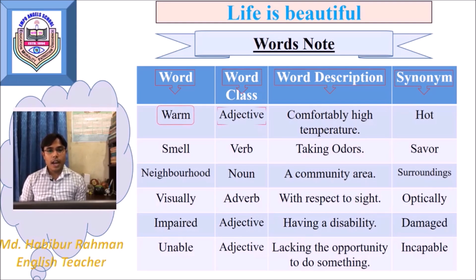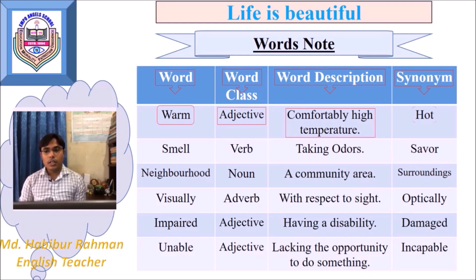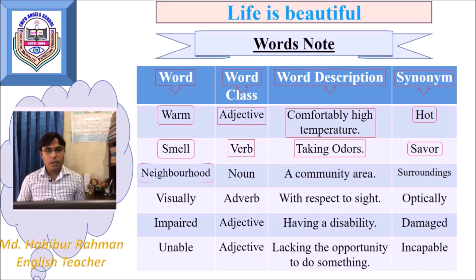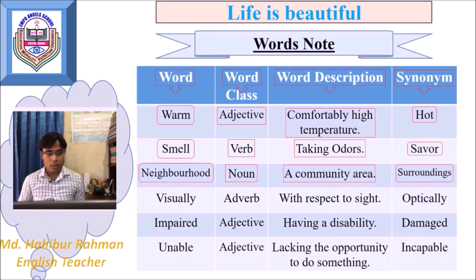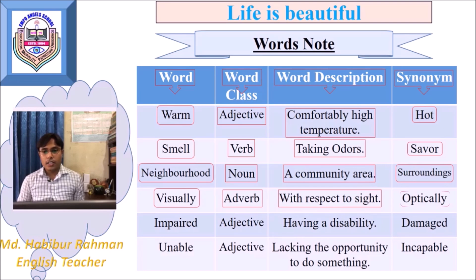Warm — it's an adjective. Warm means comfortably high temperature; the temperature is high but it's comfortable. And hot is a synonym for the word warm. Smell — it's a verb. Smell means taking in odors. Sniff is a synonym for the word smell. Neighborhood — it's a noun. Neighborhood means a community area, and surroundings is a synonym for the word neighborhood. Visually — it's an adverb, meaning with respect to sight, and optically is a synonym for the word visually.